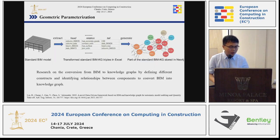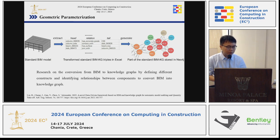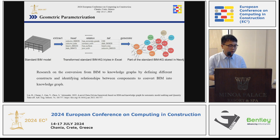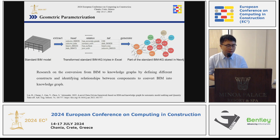The third topic is Geometric Parameterization. Scholars research the conversion from BIM to knowledge graphs by defining different constructors and identifying the relationships between coupled nodes to convert BIM into a knowledge graph. In one paper, scholars extracted information from a BIM model into Excel, and based on that information, constructed a knowledge graph — greatly reducing the manual effort required in the process.